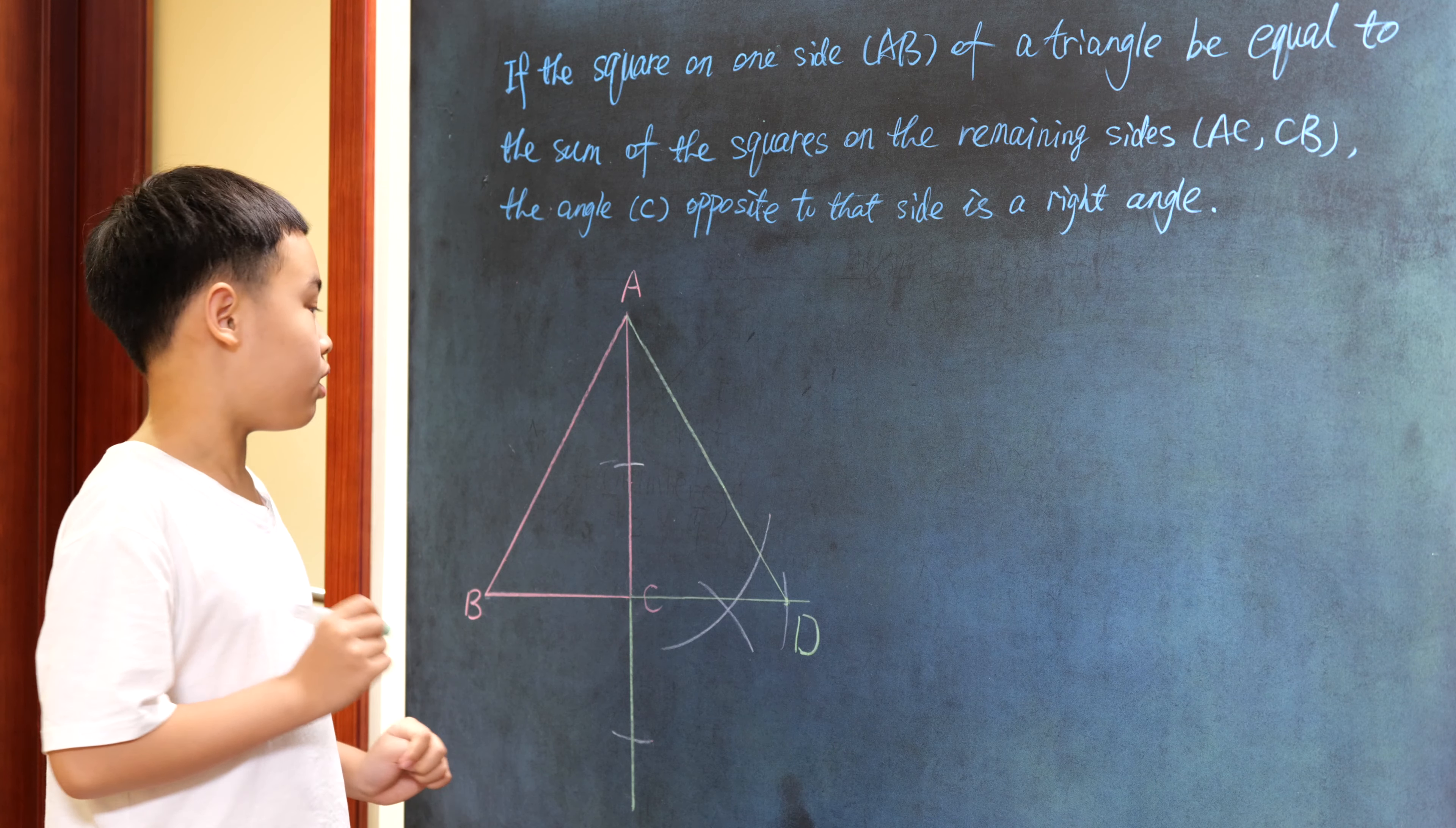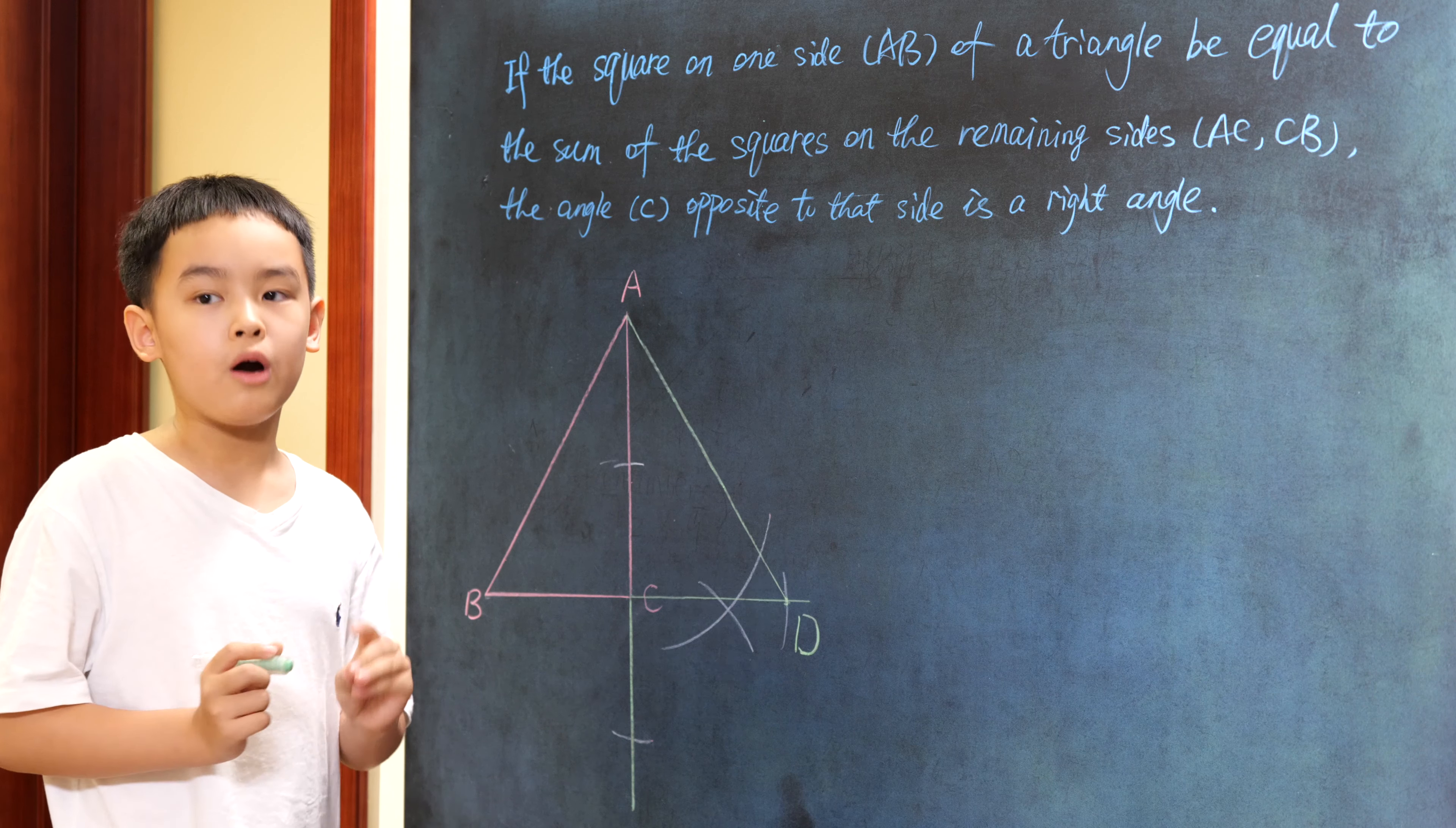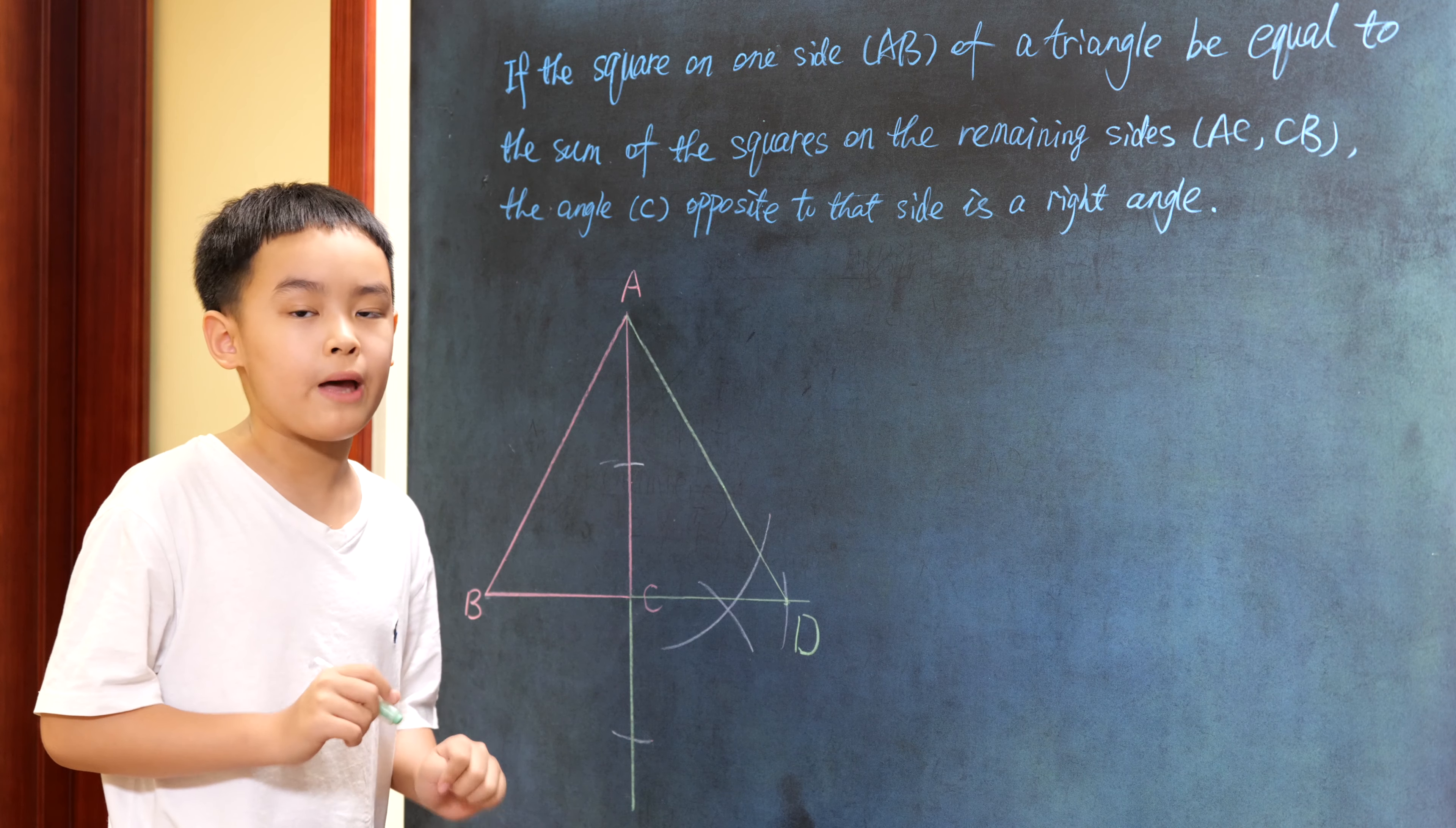And so, we have AB equal to AD and BC equal to CD and CA common to both. And so, triangle ABC shall be equal to triangle ADC.